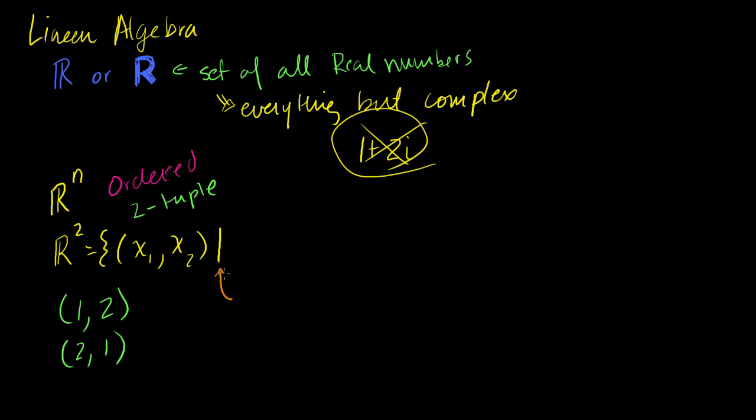When I say ordered, I'm saying that (1,2) is fundamentally different than (2,1), that these aren't the same 2-tuple. Each of these is a 2-tuple. But ℝ² is a set of all 2-tuples such that - that line there just means such that, or maybe for which - such that each of the numbers xi is a member of the reals, for i less than or equal to 2 and greater than or equal to 1, and i is an integer.